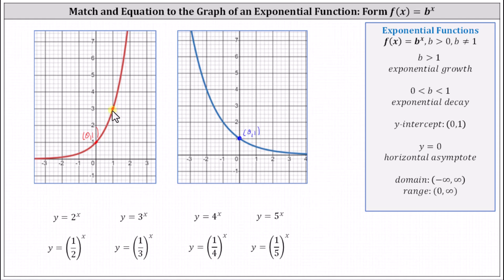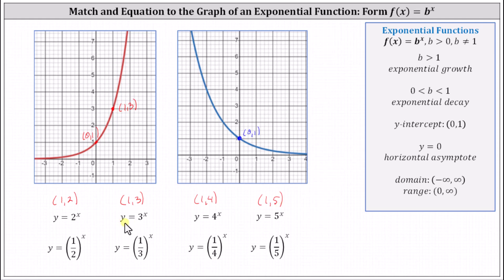Let's find the point one comma three on the red graph, which means when x is one, y must equal three. For y equals two to the power of x, when x is one, y equals two — this point is not on the function, so this equation is not correct. For y equals three to the power of x, when x is one, y equals three, and the graph does contain the point one comma three. For y equals four to the power of x, when x is one, y equals four. For y equals five to the power of x, when x is one, y equals five. So y equals three to the power of x is the only equation where x equals one gives y equals three.